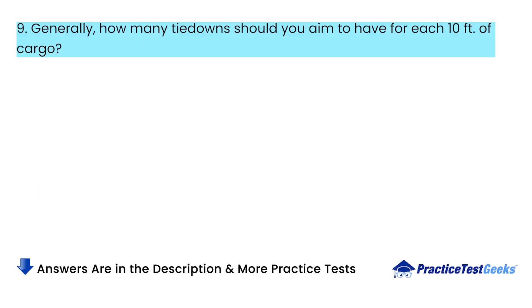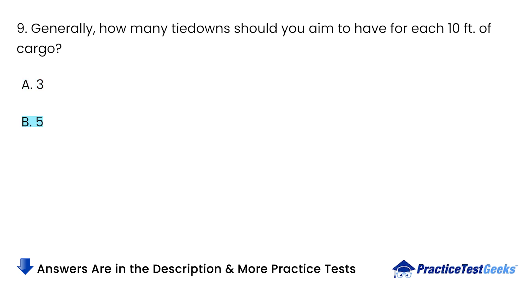Generally, how many tiedowns should you aim to have for each 10 feet of cargo? A. 3. B. 5. C. 4. D. 1.